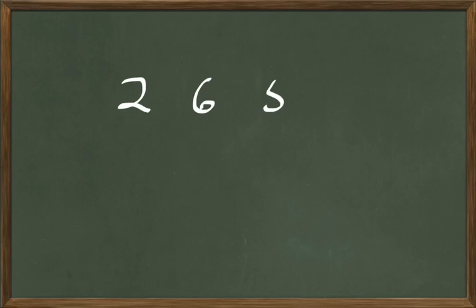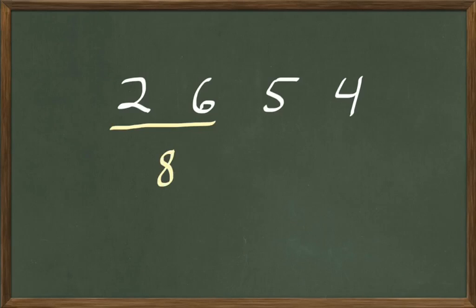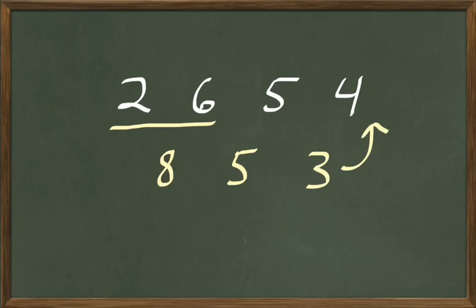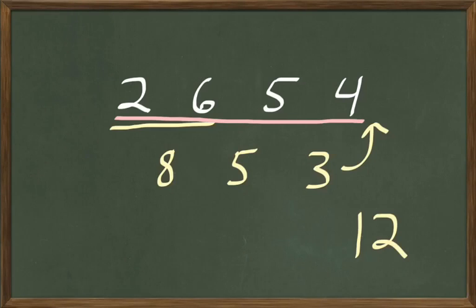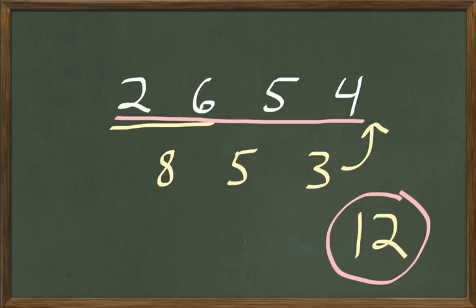Let's do 2 and 6 less 5 multiplied by 4. How many are 2 and 6? That's 8. Less 5: 8 less 5 leaves 3. And 3 four times? 4 times 3 are 12. So 2 and 6 less 5 multiplied by 4 are 12. See, that sounded complicated at first, but when we break it down into easy steps, it's not hard at all.